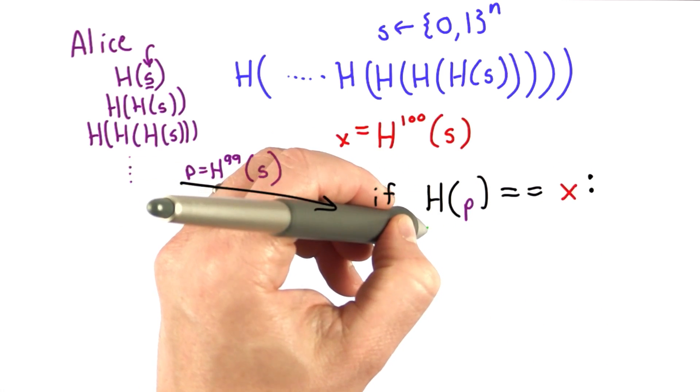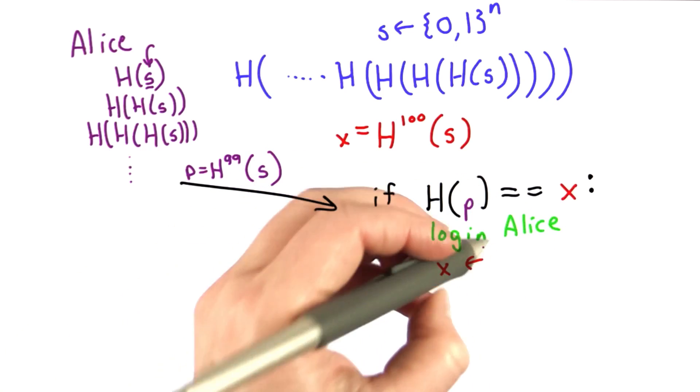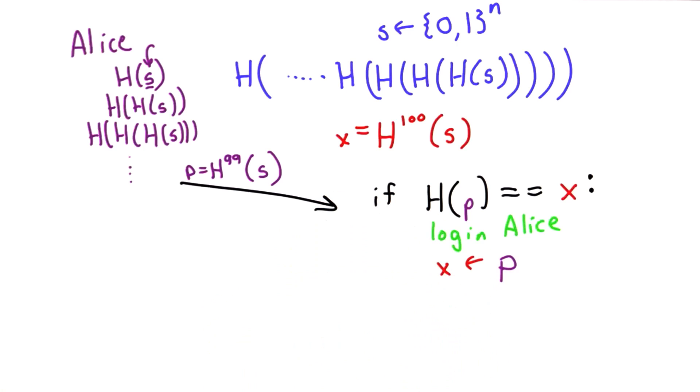If it is, it will allow Alice to log in, and will also update the value of x. The new value of x will be the value Alice sent as p. So that's how the first log in works.